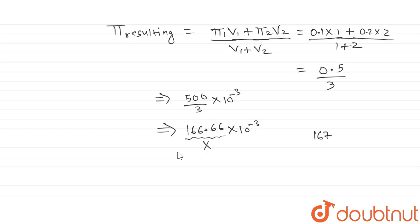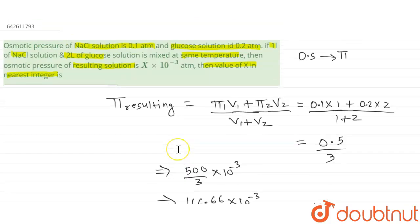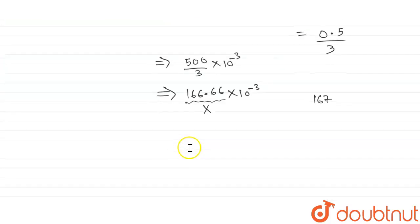so nearest integer is going to be 167. So we can write it as 167 into 10 raised to power minus 3.